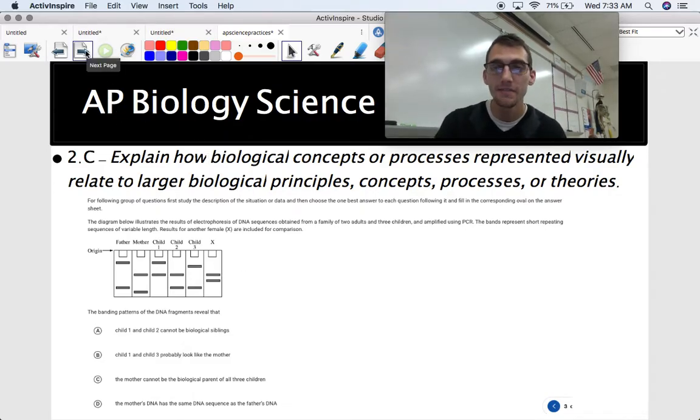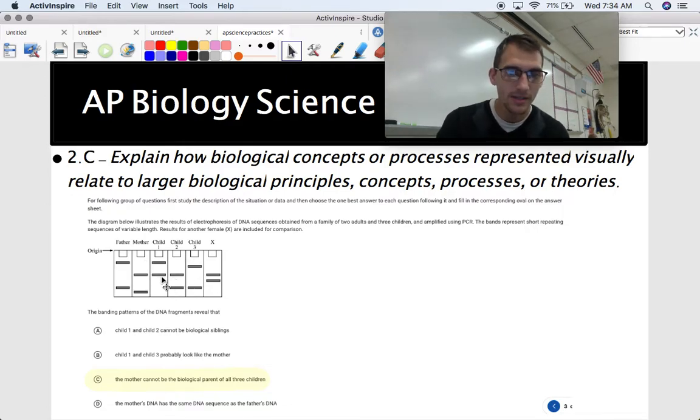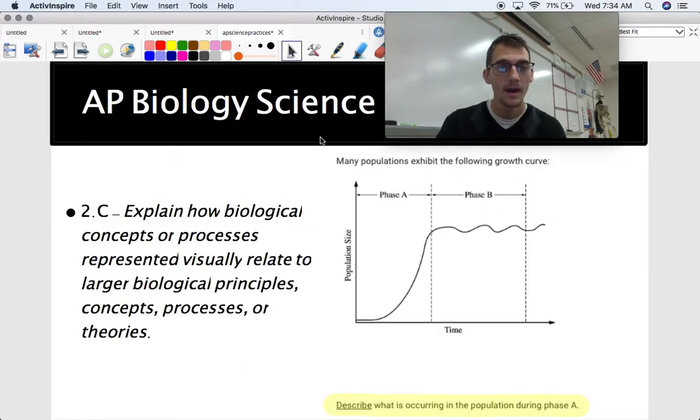So 2.C, go ahead, pause this if you're going to try to answer this question. I know it's a little small, but hopefully you can zoom in a little bit. But the answer would be C. The mother cannot be the biological parent of all children. Because, check it out. Here's the mom. Here's the child. Look, they've got some matching fragments here for child one and child two, but not for child three. And these other ones, if you go through them one at a time, neither of them make sense except for C.